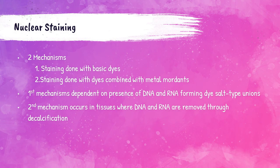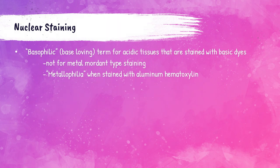Nuclear staining is not fully understood, but it is thought to occur through two different mechanisms. The first uses basic dyes — those with a positive charge, also called cationic dyes — which is dependent on the DNA and RNA in the nucleus to form dye-salt-type unions. The second mechanism uses dyes combined with metal mordants; this occurs in tissue where DNA and RNA are removed through decalcification. The term basophilic — or base-loving — refers to acidic tissues that take up basic dyes, but this term is not correct for the metal mordant mechanism.